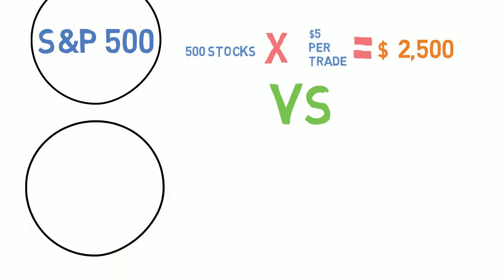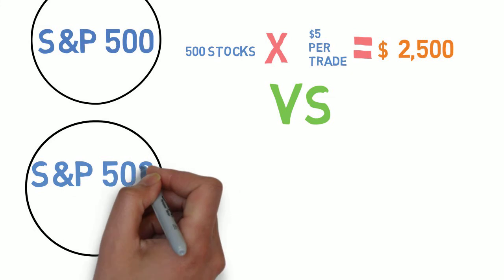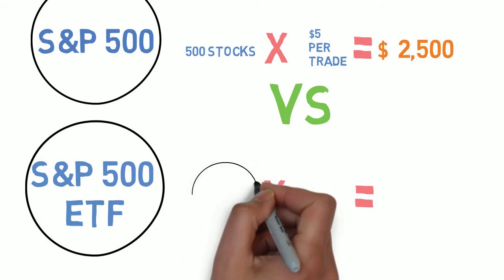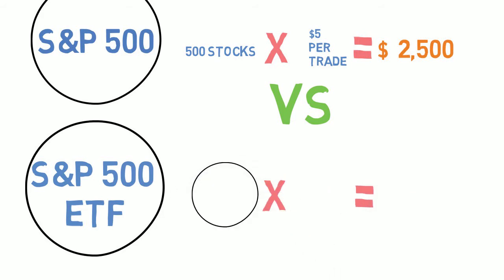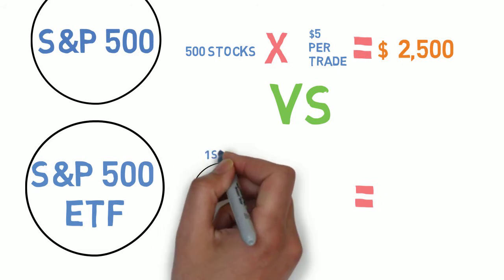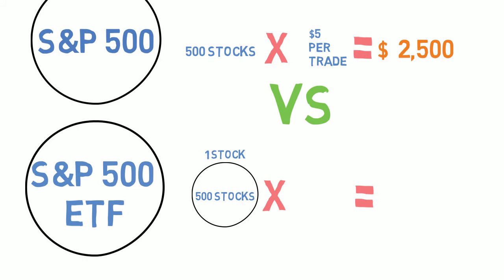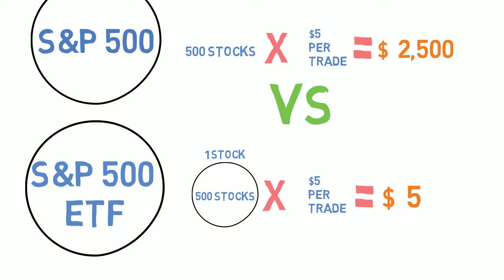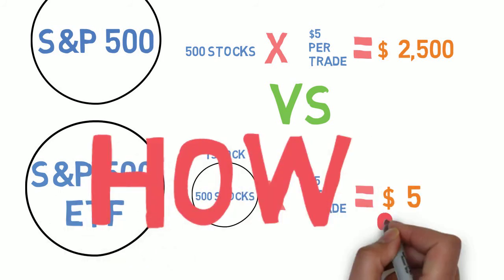So if we look at what an ETF does for the S&P 500, we take all 500 stocks and package them up into one tradable stock. That way it offers easy tradability and access to the broader markets. It would only cost you $5 because you're only putting on one trade, and it takes a lot less time.